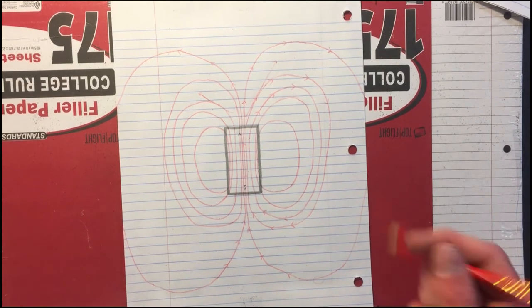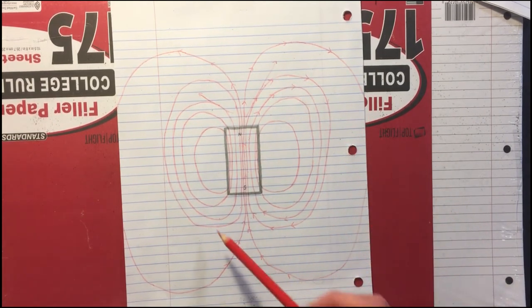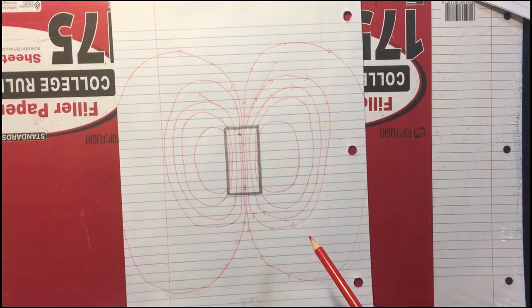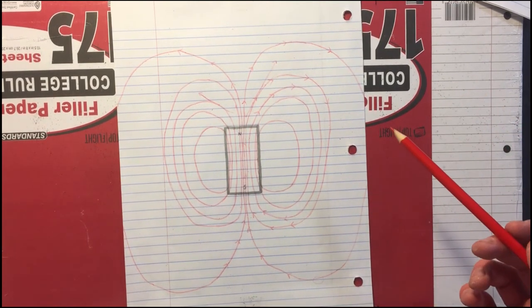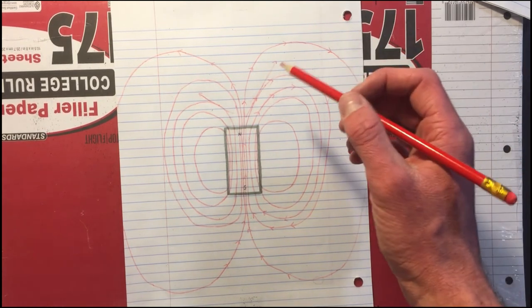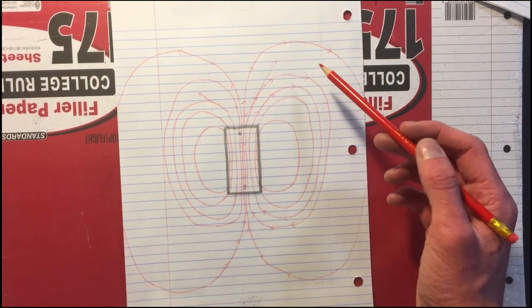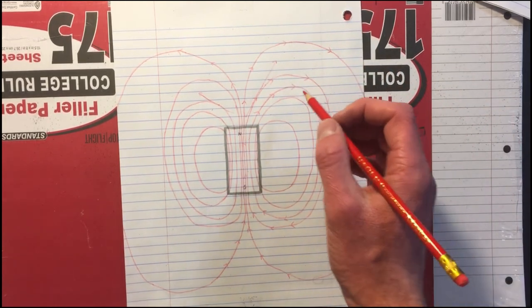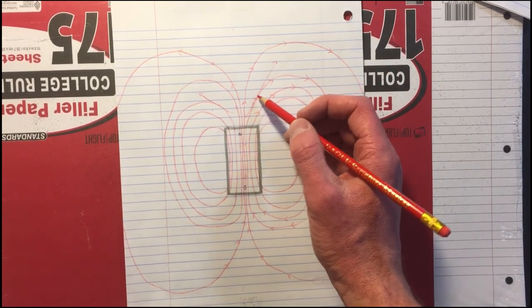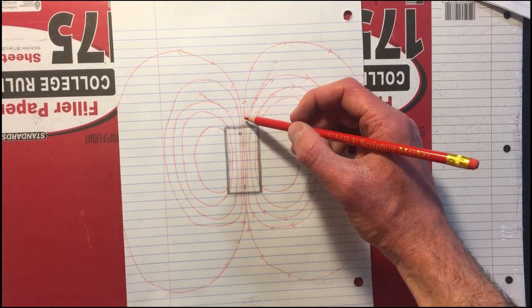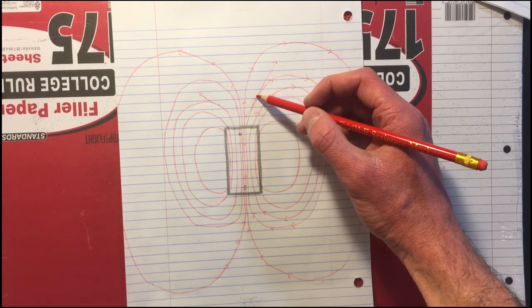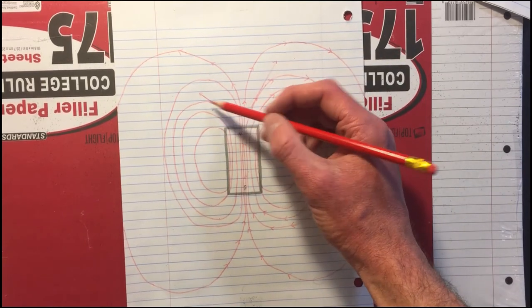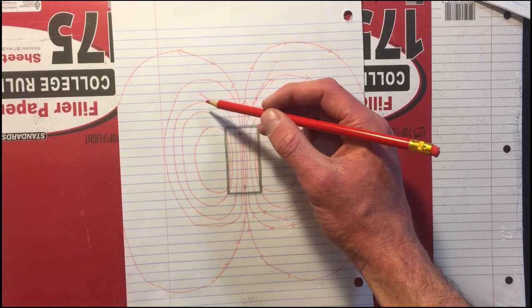Another thing about magnetic fields and field lines is that at any given point on the magnetic field, the magnetic field will be tangent to the field line. Since it's curved, at any given point the magnetic field is represented by an arrow tangent to that field line — for example, here this arrow is tangent to the field line and that represents the magnetic field at that point.